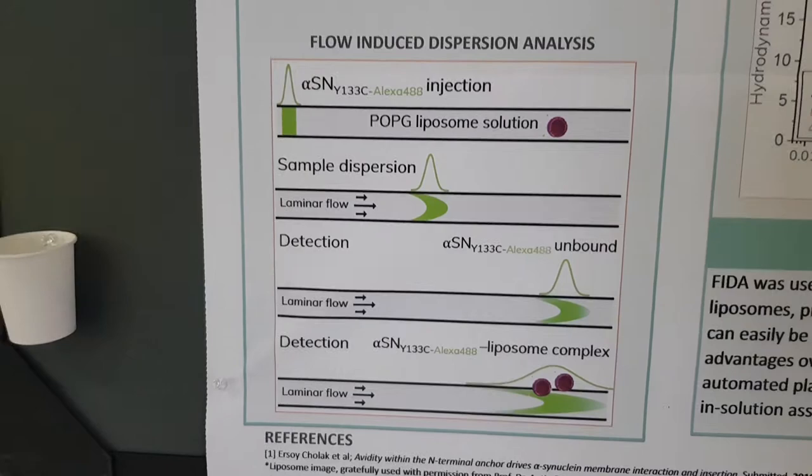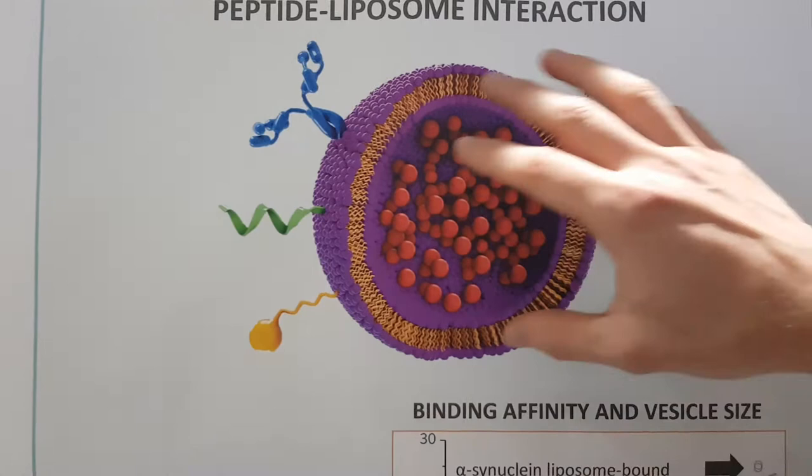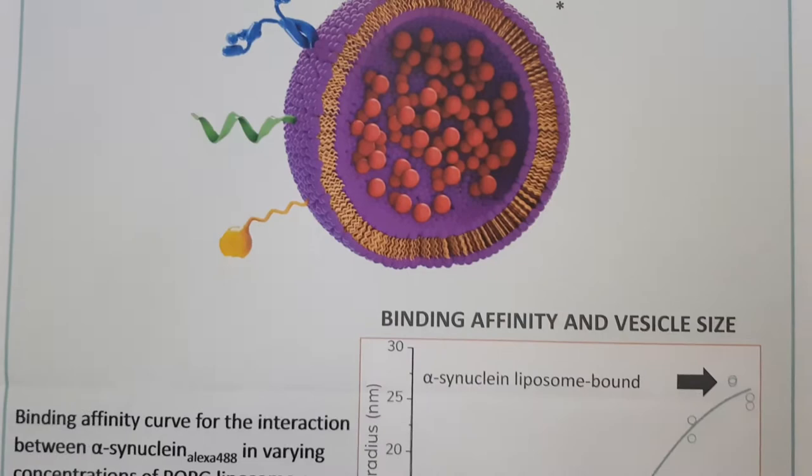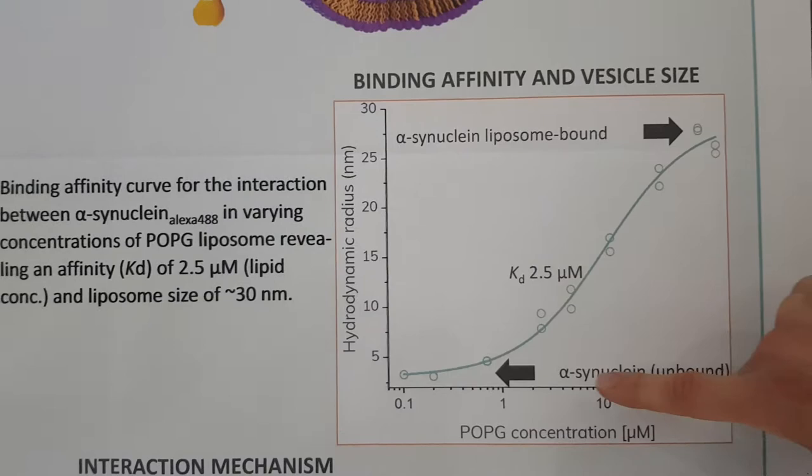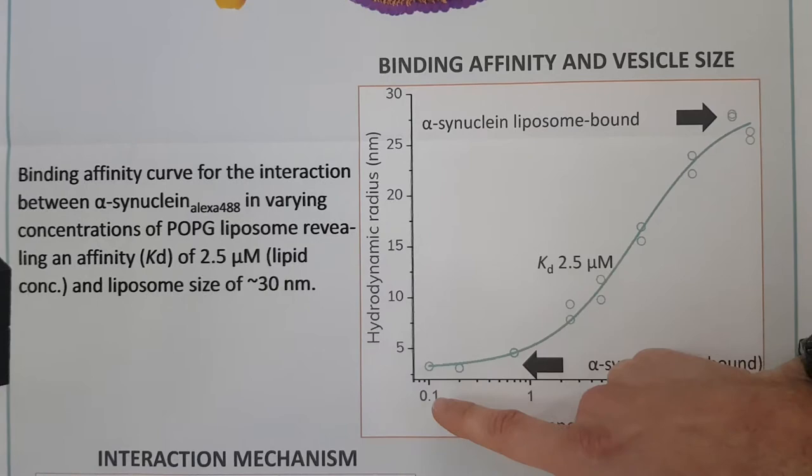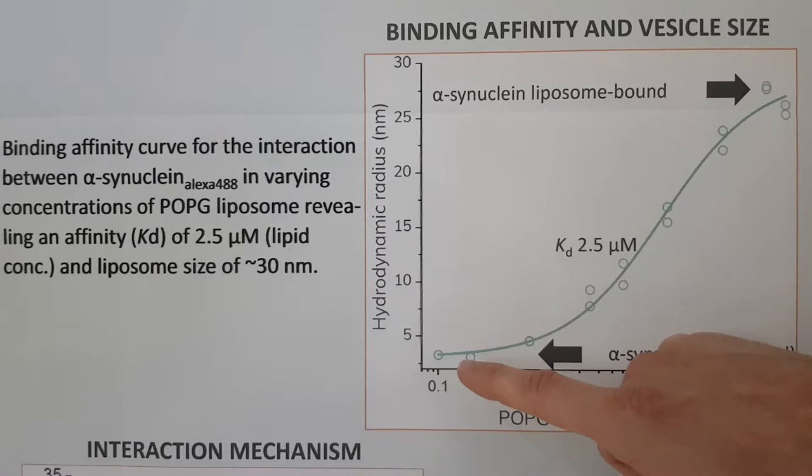This illustration shows what we are measuring — alpha-synuclein binding to liposomes. Down here we have the size of unbound alpha-synuclein, around three nanometers hydrodynamic radius. As we titrate with our POPG liposomes, we see that the apparent size of alpha-synuclein increases up to around 30 nanometers.